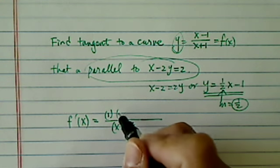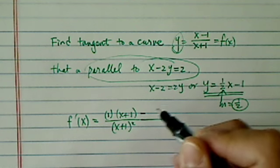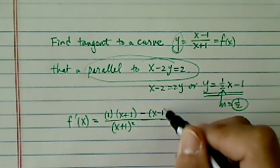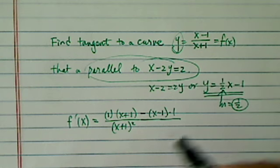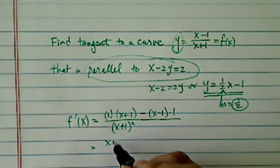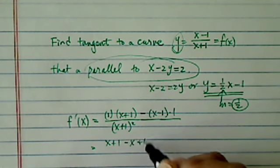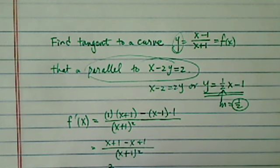Leave the second one alone minus leave the first one alone and take derivative of the second one, which is 1. Let's simplify this. x plus 1 minus x plus 1, x plus 1 squared. So I have 2 x plus 1 squared.